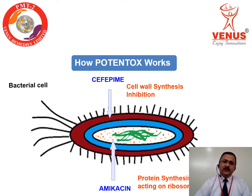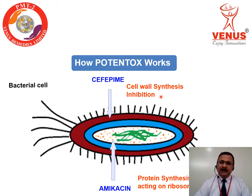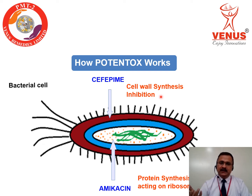Let us look at the mechanism of action of Potent Talks. Here we are showing a bacterial cell. Cefepime is a fourth-generation cephalosporin. The mechanism of cefepime includes inhibition of cell wall synthesis. By inhibiting cell wall synthesis, it creates an osmotic gradient within the bacteria and leads to rupturing of the bacteria itself. This is how cefepime kills the bacteria — by inhibiting bacterial cell wall synthesis.